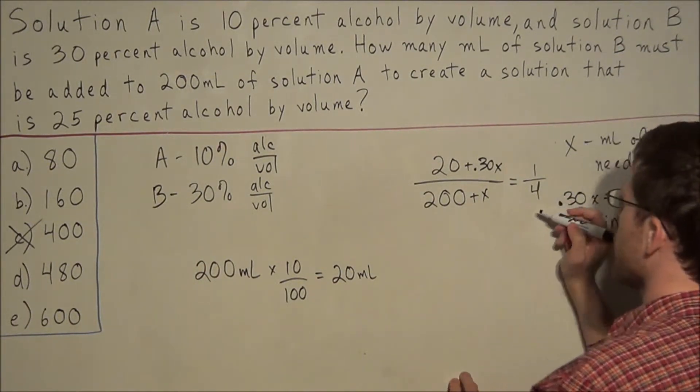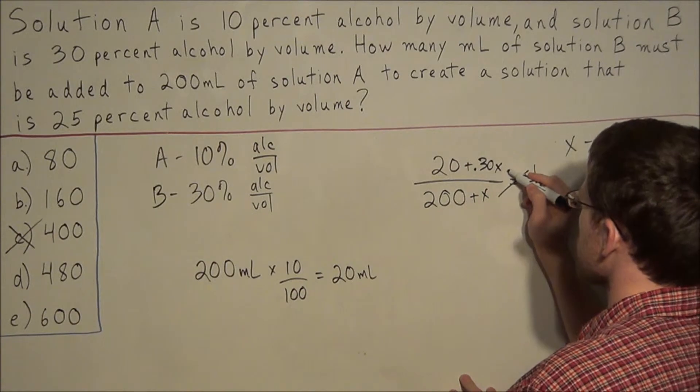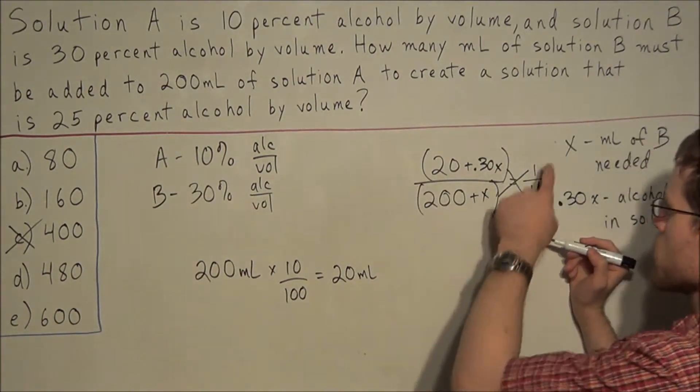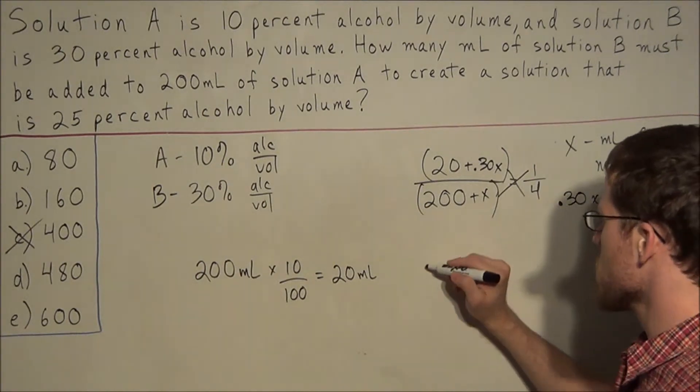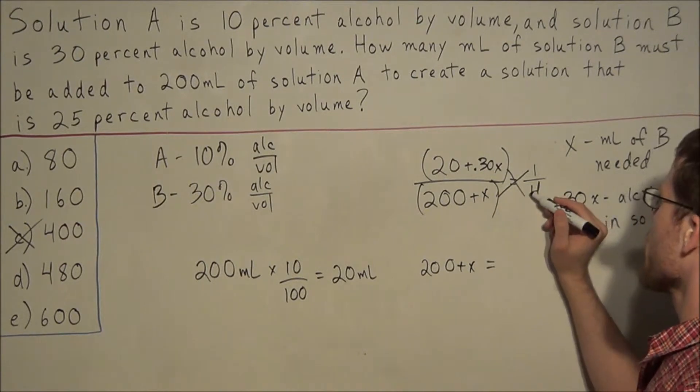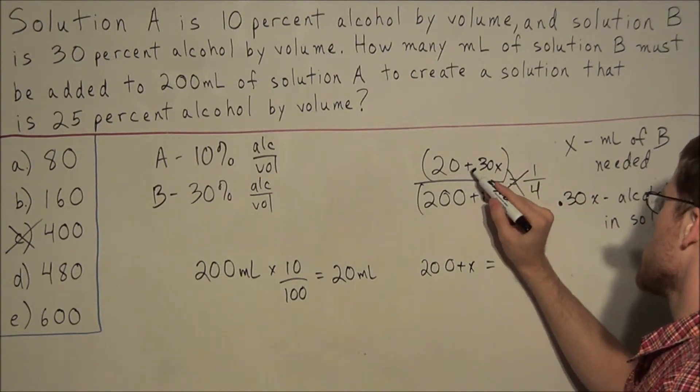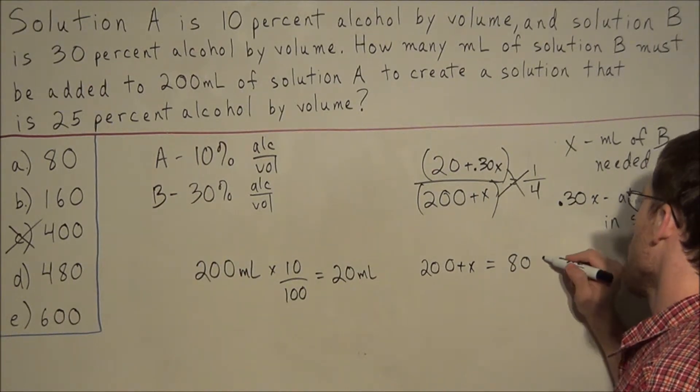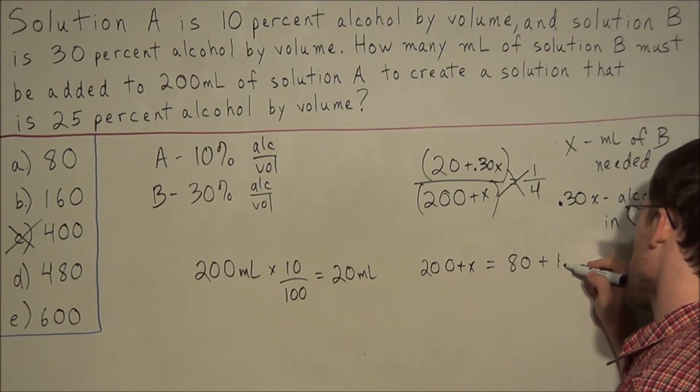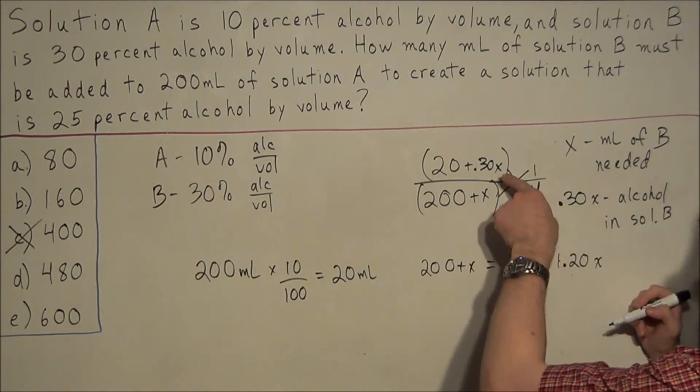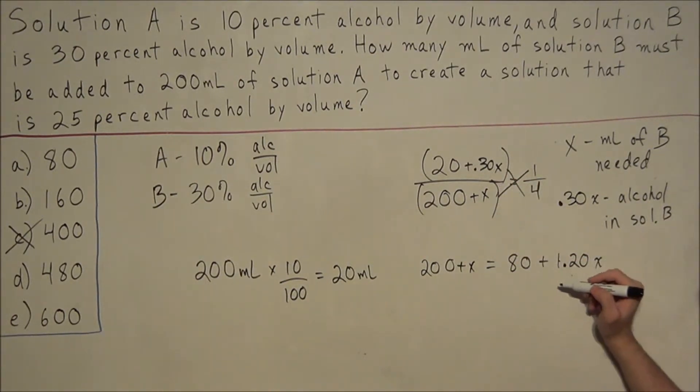So now to solve for X, all we need to do is cross-multiply. We'll put parentheses so we know to distribute. 1 times 200 plus X is 200 plus X. And now we have 4 times 20 plus 0.30x. So 4 times 20 is 80. And then 4 times 0.30 is 1.20. And we have X attached to the last term.